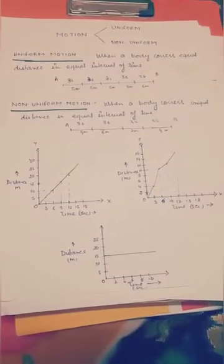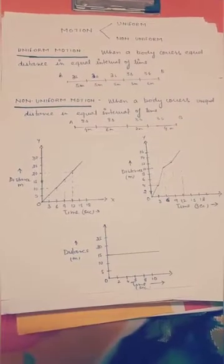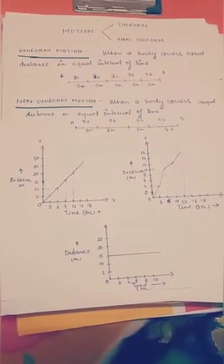Let us start. Motion are of two types - uniform and non-uniform motion. For uniform motion, when a body travels equal distance in equal interval of time, you can see it as C.